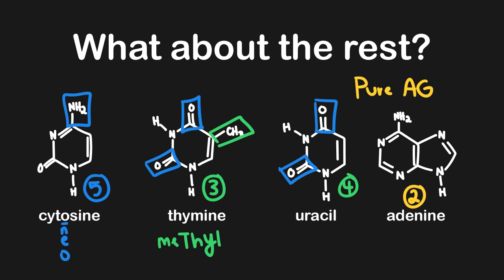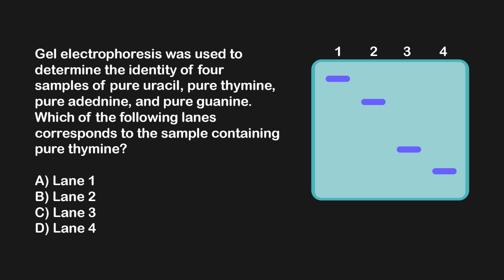Let's apply this in a question. Gel electrophoresis was used to determine the identity of four samples: pure uracil, pure thymine, pure adenine, and pure guanine. Which lane corresponds to pure thymine? Gel electrophoresis separates things on the basis of size — big things end up near the top of the gel, while smaller things end up near the bottom. Thinking about our purines: they are 'pure as gold' and gold is heavy, so the two heaviest nitrogenous bases will be adenine and guanine. Guanine is for gold, so guanine will be the heaviest, landing in lane one — closest to the top.